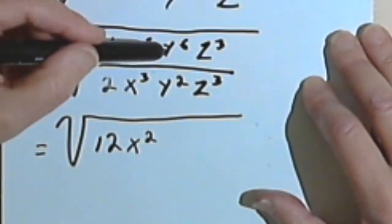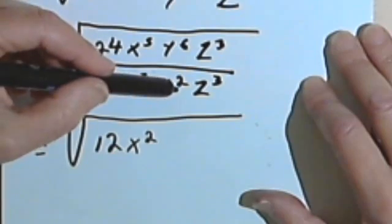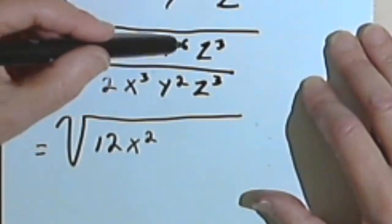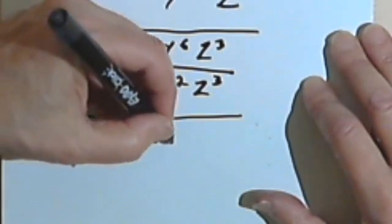Going on to the y's, we have y to the 6th over y squared. Once again, we'll subtract this 2 from this 6. That'll give me y to the 4th.